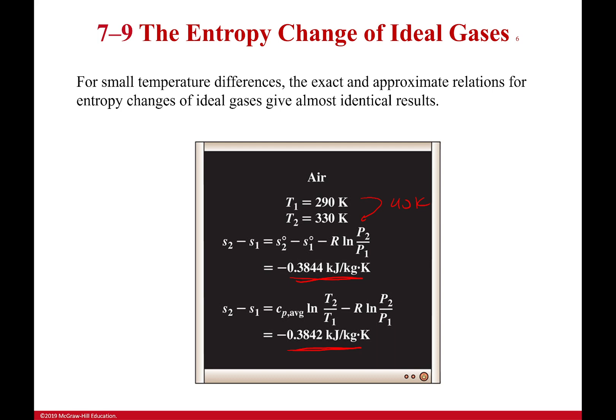Now, if I go to larger results, like if I go to 500 or 600 or 700 Kelvin, well, then I'm going to start seeing bigger and bigger differences. And the accuracy of this method, of the approximate method, will start to drop off.